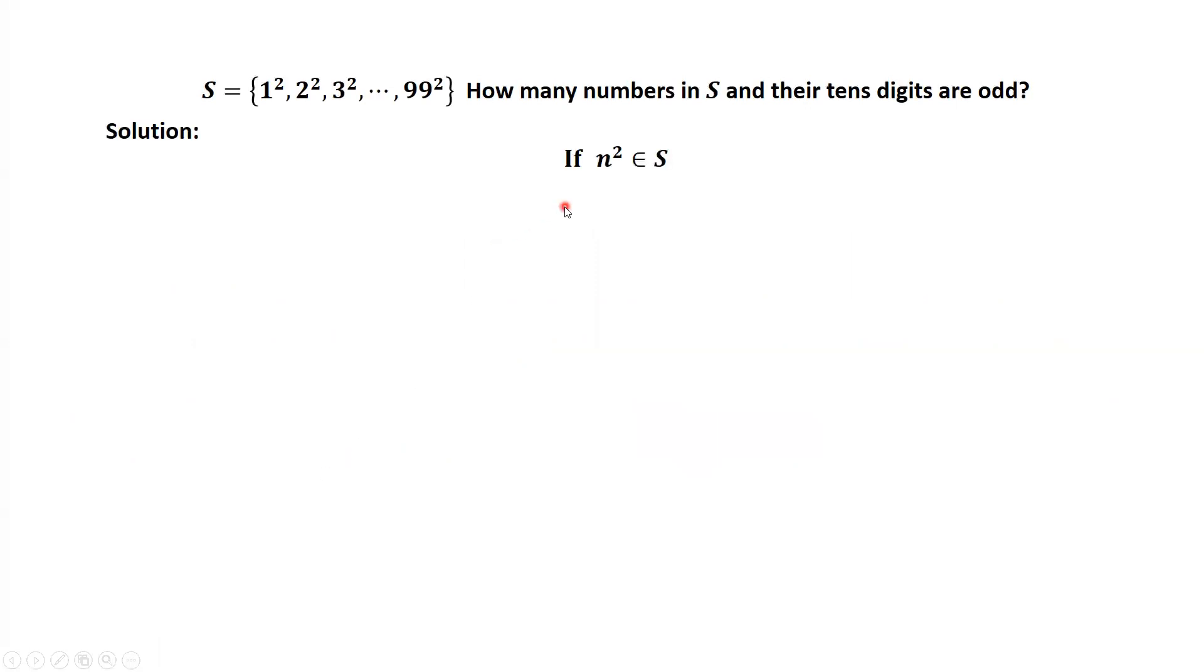For any number n squared inside of set S, we can always rewrite n as a two-digit number. Even if it is a one-digit number, we can consider A is zero.